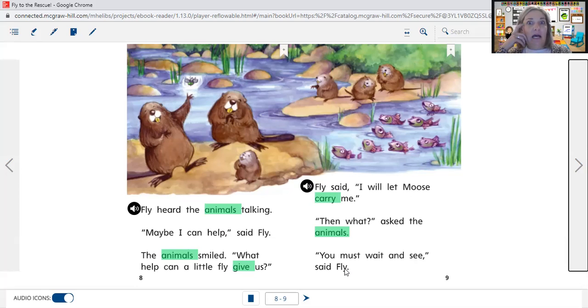They really didn't think that Fly could help. Fly said that he would have Moose carry him and he told the others, 'I'll show you. You'll see how I can help.'